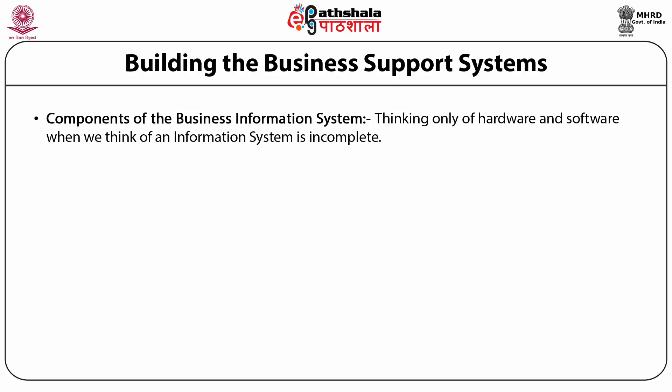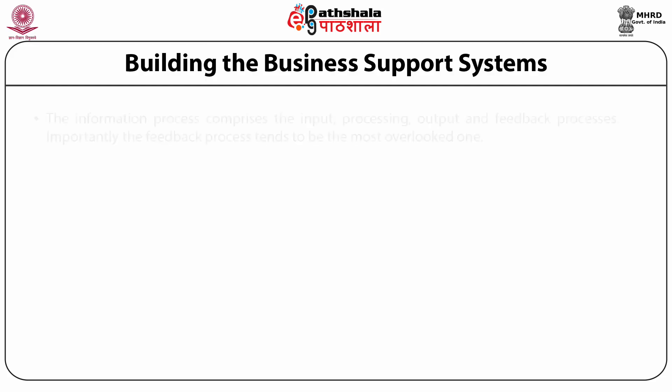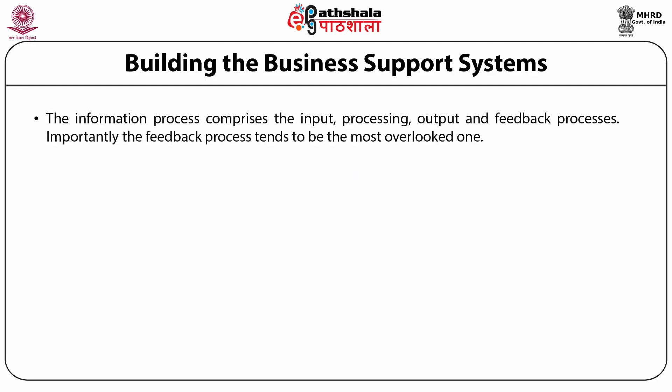Thinking only of hardware and software when we consider an information system is incomplete. There is another component of the triangle that should be considered, and that is the people side, or 'persware.' The components of a business information system include input, processing, output and feedback processes.